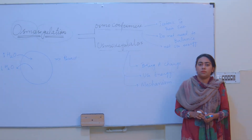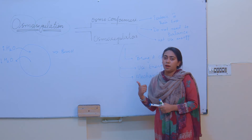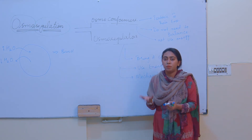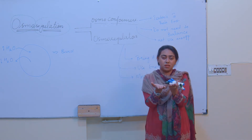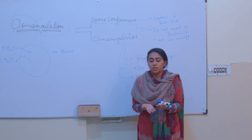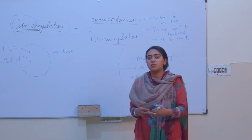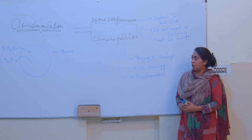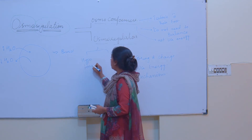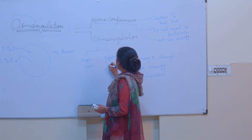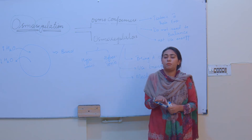An important point: osmoregulators are not isotonic to the environment. They would only regulate if something is not balanced. If something is isotonic and at equilibrium, there is no need for forward or backward reaction — things are already leveled. Movement happens only when there is a diffusion gradient or concentration difference. If isotonic, there is no need to move. So osmoregulators would be either hypotonic or hypertonic to the environment — not isotonic.